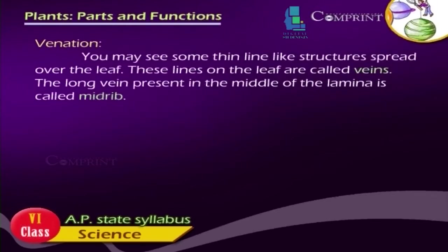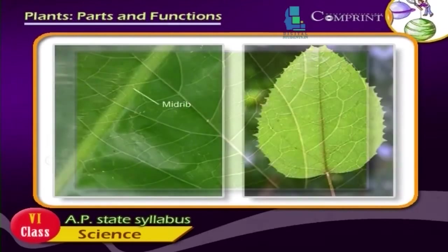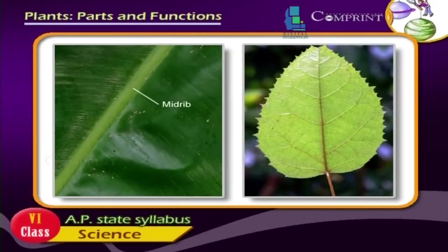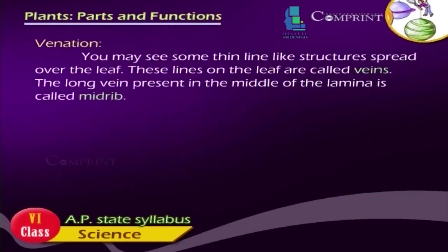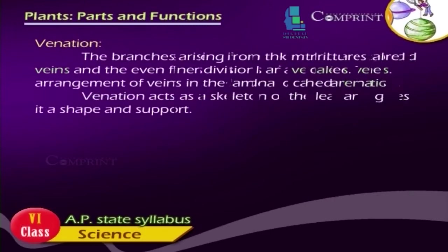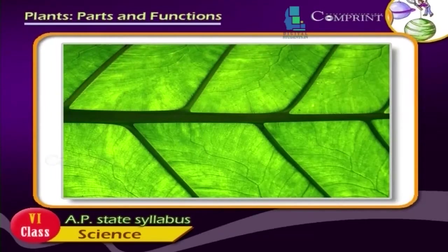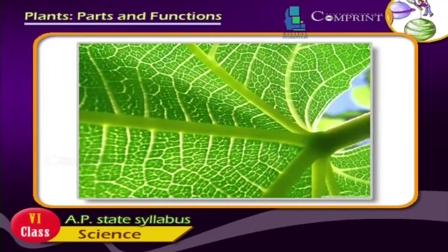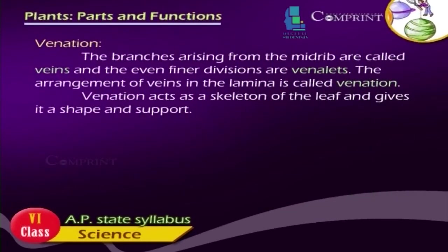Venation. You may see some thin line-like structures spread over the leaf. These lines on the leaf are called veins. The long vein present in the middle of the lamina is called the midrib. The branches arising from the midrib are called veins and the even finer divisions are veinlets. The arrangement of veins in the lamina is called venation. Venation acts as a skeleton of the leaf and gives it shape and support.